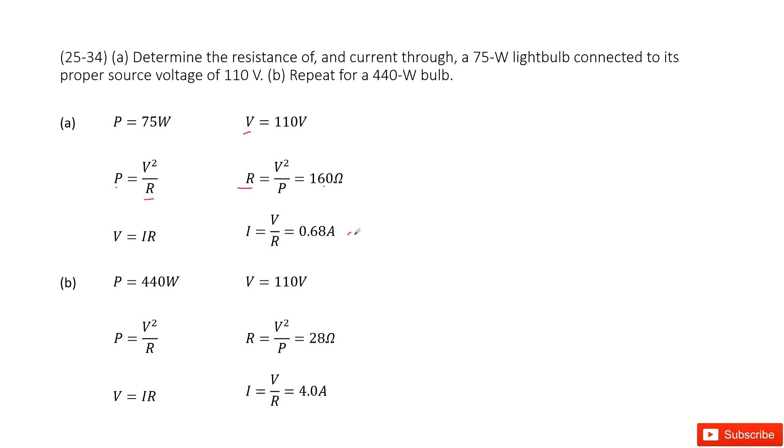Similarly, part B asks to repeat the calculation for another light bulb where the power is 440 watts. Everything is the same. You just need to change the value of P and do all the calculations again. This time, you find the resistance is 28 ohms and the current is 4 amperes. Thank you.